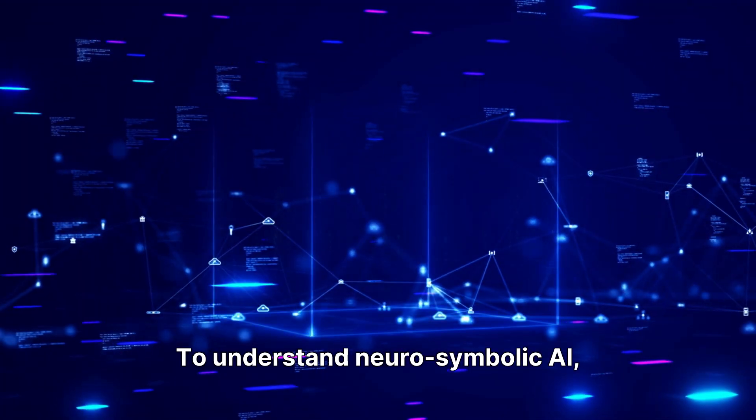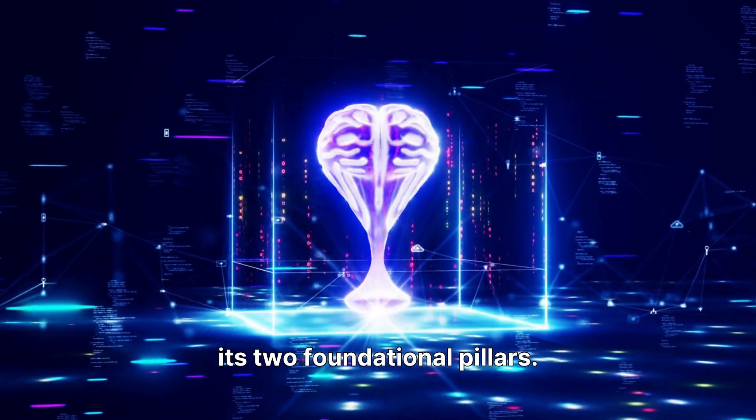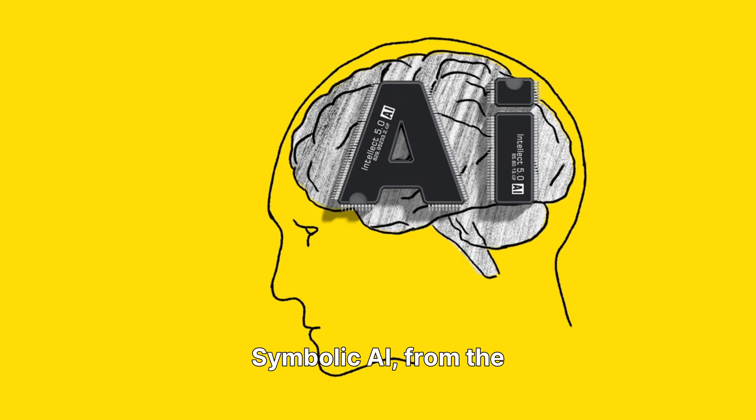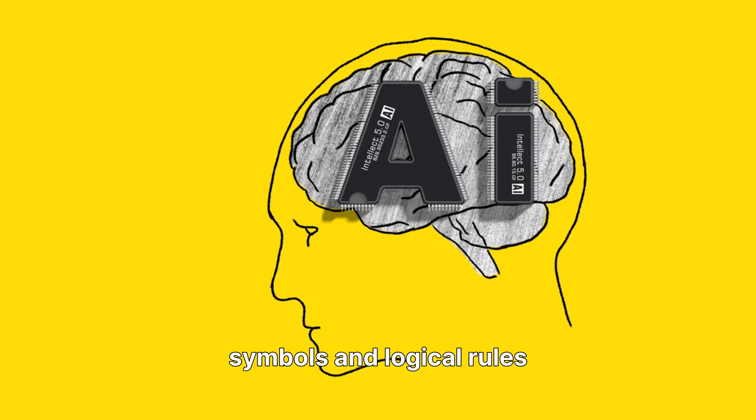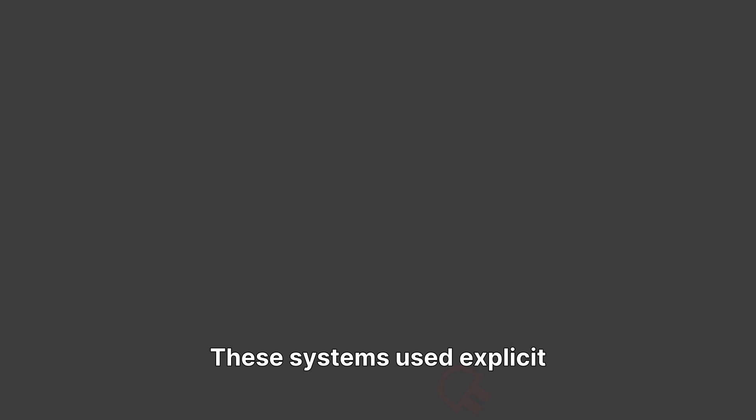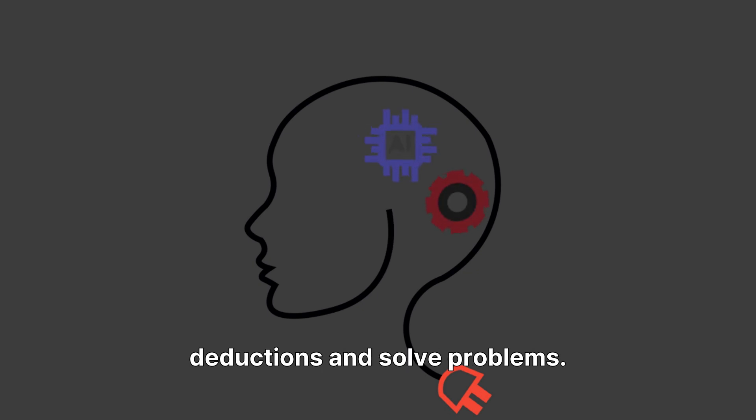To understand neurosymbolic AI, we must first understand its two foundational pillars. Symbolic AI, from the 1950s to 80s, used symbols and logical rules to represent intelligence. These systems used explicit knowledge representations to make deductions and solve problems.